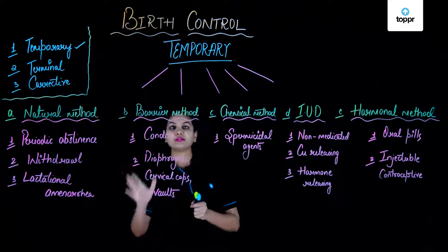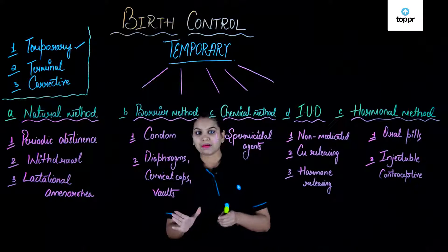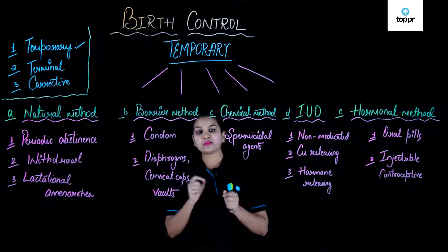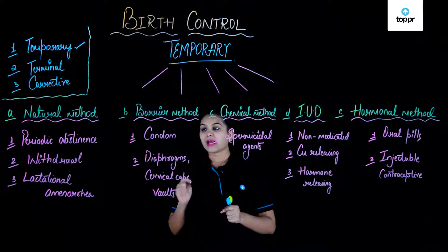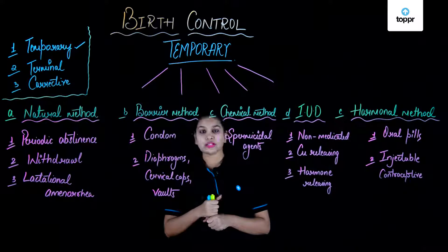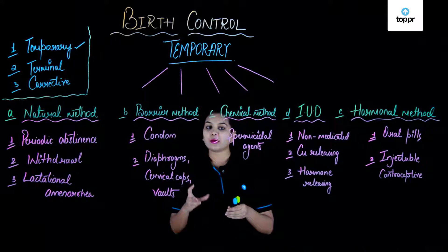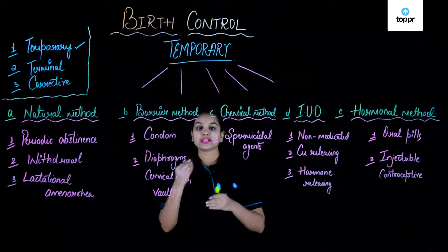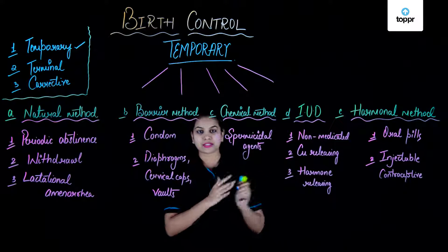Next we come to the barrier method. Barrier method also aims to prevent the meeting of sperm and ova but does it with the help of physical barriers of two types. The first ones are condoms — rubber latex which covers the penis so that during ejaculation the sperm doesn't enter the female reproductive system.